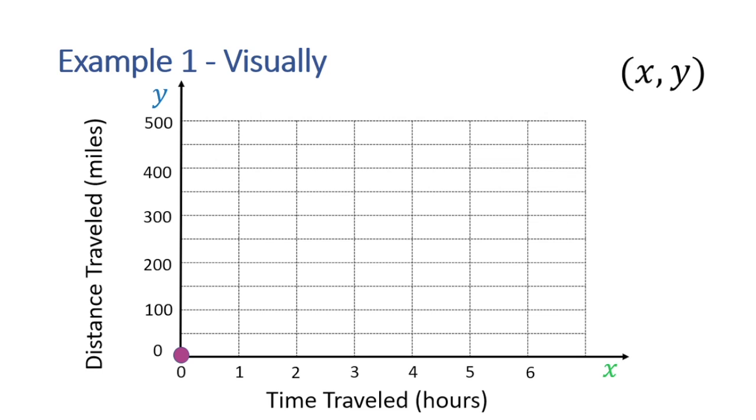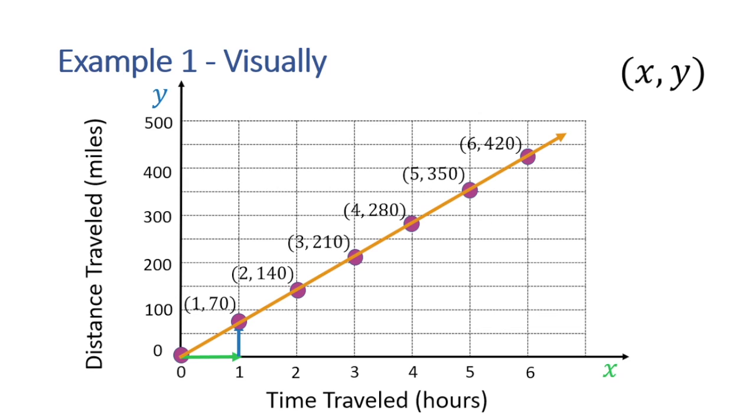We begin by plotting our first point, (0, 0), at the origin. That one is fairly straightforward. To plot our next point, (1, 70), we move one unit horizontally to represent traveling for one hour, and 70 units vertically to represent traveling 70 miles. We then plot our point (1, 70) right here. We repeat this idea to plot (2, 140), (3, 210), and the other points on our table. Finally, we connect the points to display the graph of our function.